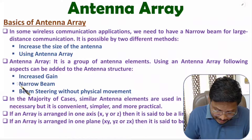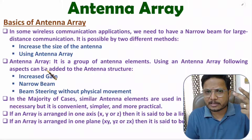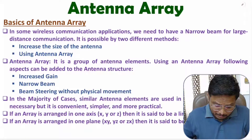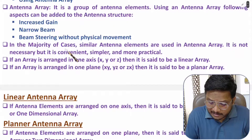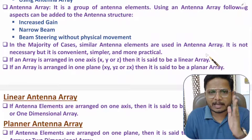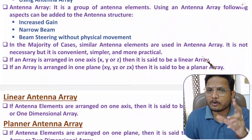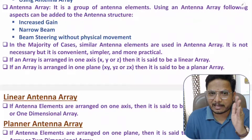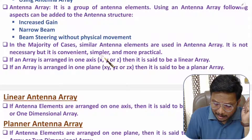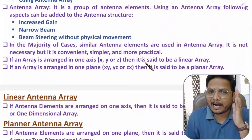Because of these three major reasons, we use antenna array widely in many applications — applications based on long distance communication, and applications based on steering of beam without physical movement of antenna. In the majority of cases, you will observe that similar antenna elements are used in antenna array. You can use different antenna elements as well; there is no compulsory requirement. But because of similar elements, one can have more convenience, the structure will be simpler, and it will be more practical. So, in the majority of applications, we use identical antenna elements in antenna array.